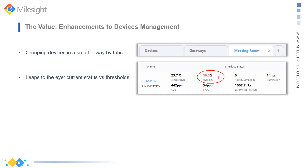Also on the same page, you can monitor the current status and current value of sensors or sensor nodes against your threshold settings. For example, this increase icon tells you clearly that the humidity value is much higher than your certain threshold, than your previous settings, so you need to take care of that.